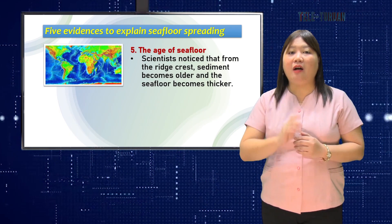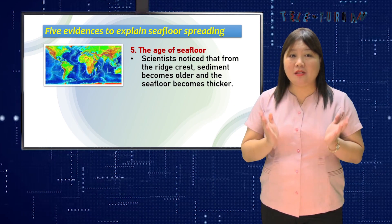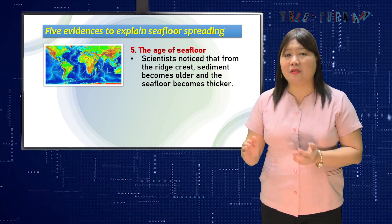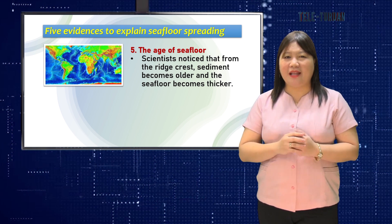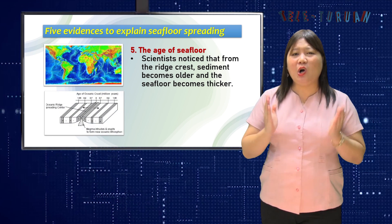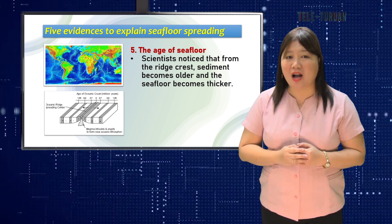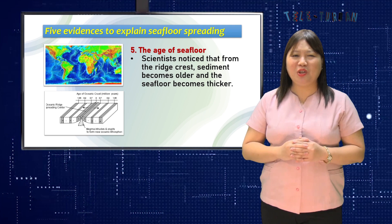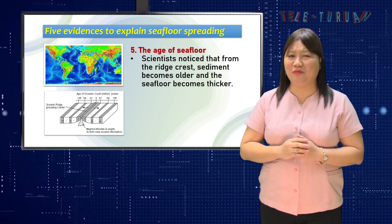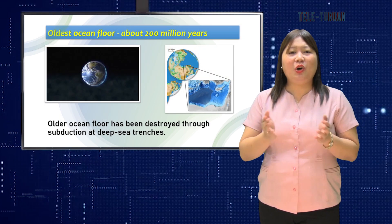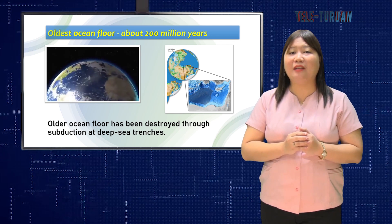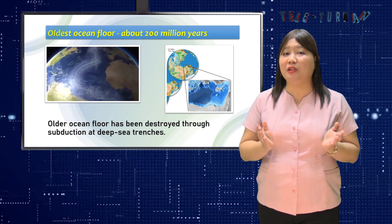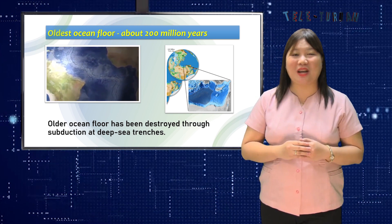Fifth, the age of the seafloor discloses seafloor spreading. Scientists noticed that from the ridge crests, sediment becomes older and the seafloor becomes thicker. Since the oldest ocean crust is so much younger than the oldest continental crust, scientists realized that something was happening to the older seafloor. The oldest known ocean floor is dated at about 200 million years, indicating that older ocean floor has been destroyed through subduction at deep sea trenches.